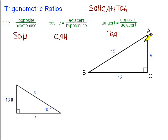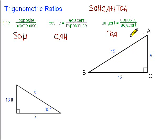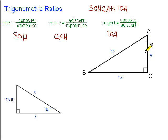Imagine yourself standing in the angle that you're talking about. If we're working with angle A, imagine you're standing right here. The hypotenuse is always going to be the side that's opposite the right angle — that's always going to be the hypotenuse. The adjacent and opposite sides change depending on which angle we're working with. The opposite side is the one we can see straight across from angle A, which in this case would be the 12. The adjacent side is the one we can touch — adjacent means right next to — and the adjacent to angle A is the 9.